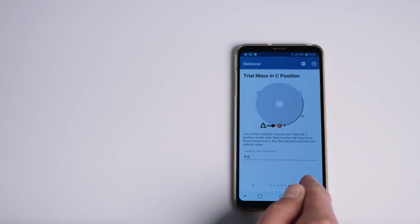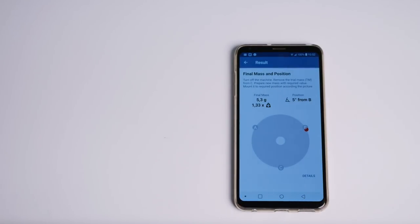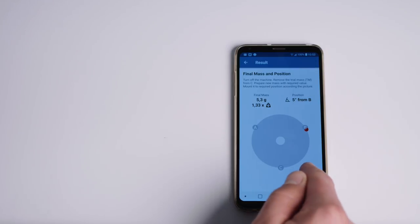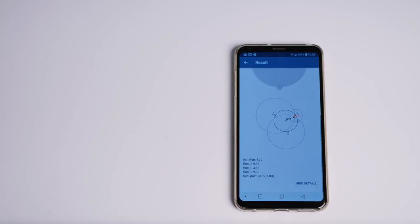Okay, now the app has all the information where I should place the final correction mass. I should place 5.3 grams at 5 degrees from B trial mass position. I can click the details button and see how the trial mass was influencing the rotor vibrations in A, B and C positions. According to these three measurements the final mass was calculated.